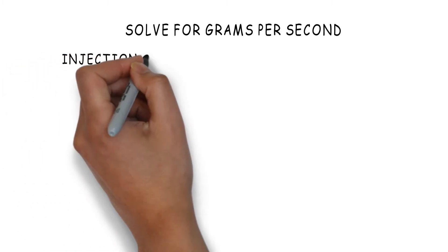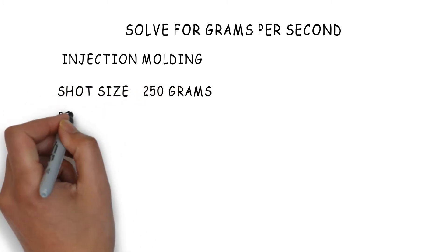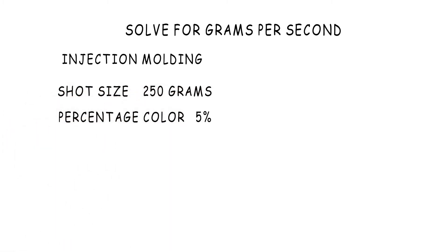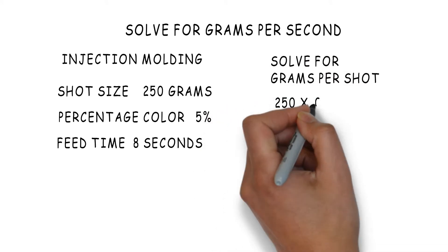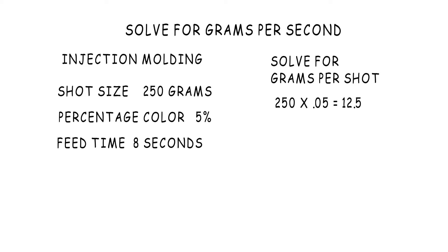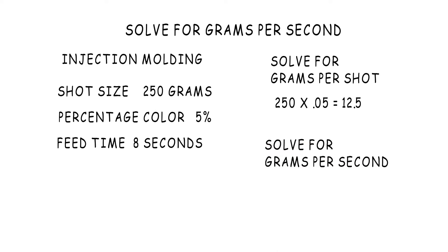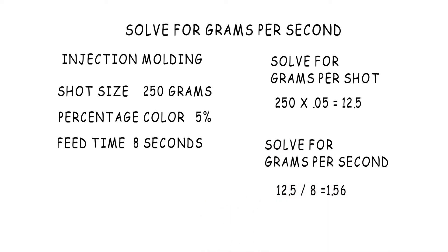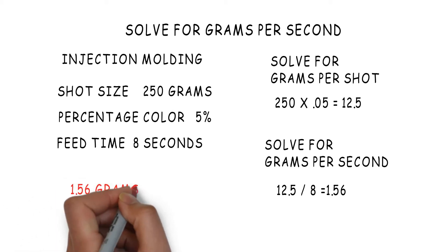Let's first look at injection molding. If we have a shot size of 250 grams, a color percentage of 5%, and a feed rate of 8 seconds, we want to solve for the grams per second. So if we take 250 grams and multiply it times .05, we get 12.5 grams — meaning each shot we want to feed 12.5 grams. Dividing 12.5 by 8, we get 1.56 grams per second.